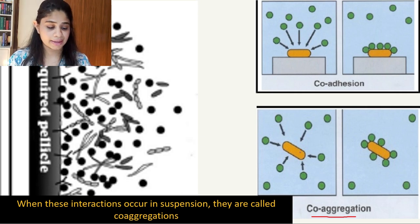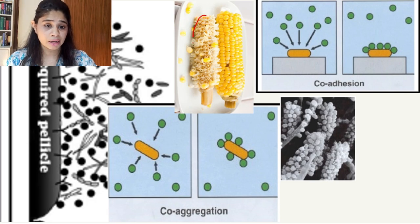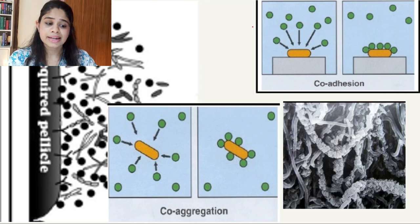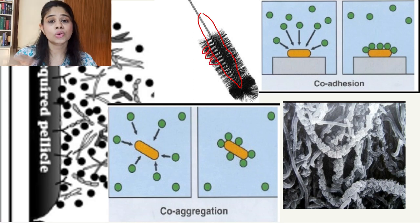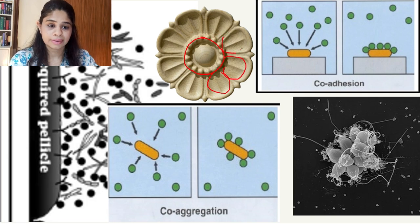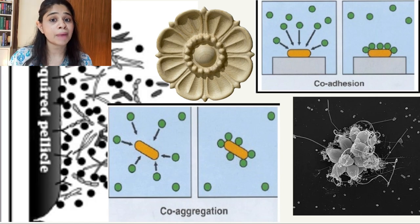There are various types of coaggregates. The corn cob appearance involves a central filamentous microorganism interacting with gram-positive coaggregates. The test tube brush appearance has a central filamentous microorganism interacting with short rod-like species. The rossette appearance involves cocci interacting with other cocci cells to form a flower-like rossette appearance. Due to coadhesion and coaggregation, bacterial growth takes place and the bacteria interact with genetically different species to form micro-colonies.